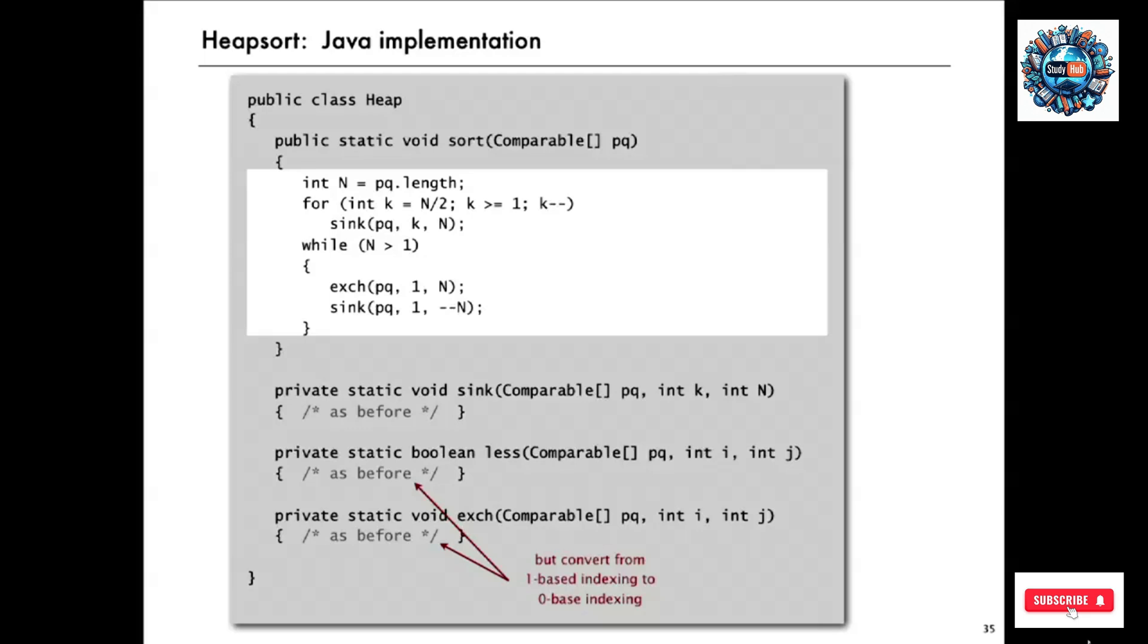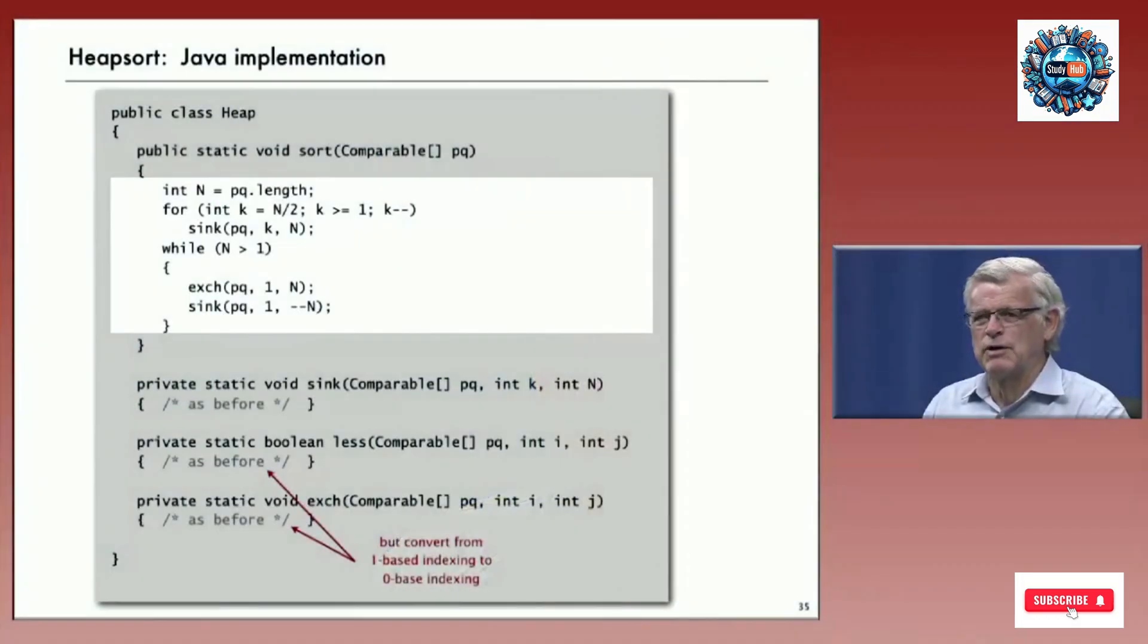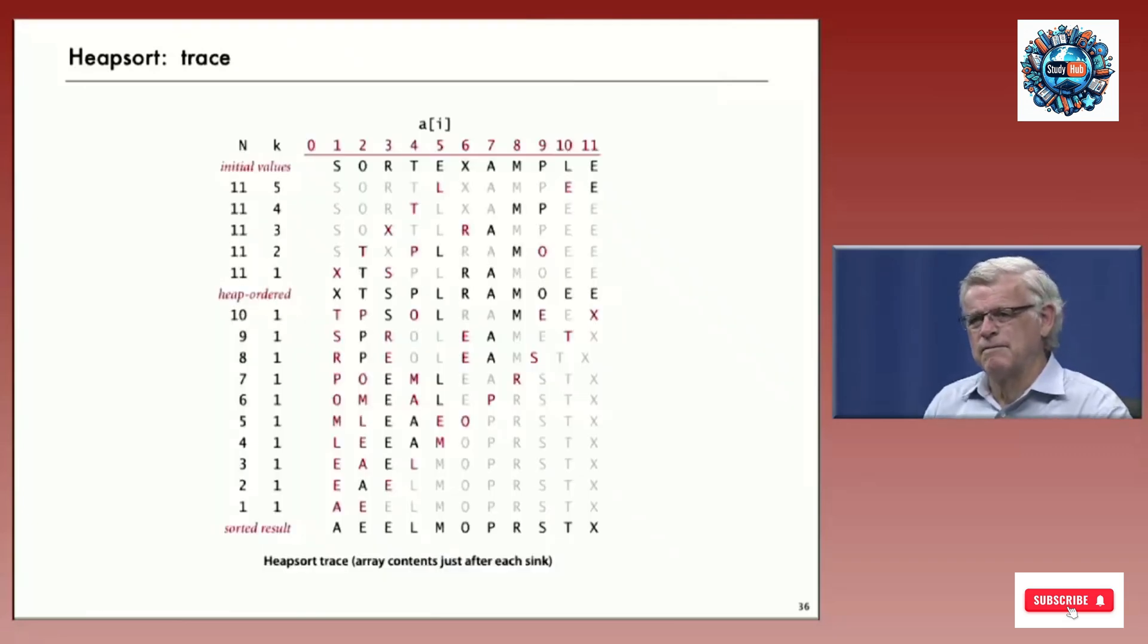There's one little detail. When you're sorting an array, of course, position zero comes into account. And we've been building our heaps from position one. So we can take care of that in the less and exchange methods by just decrementing the indices in those methods to have it work as if the array were zero through n. And that's a little implementation detail. But otherwise, this is a fine sort implementation that actually is very little code. And it's got a place in the theory of algorithms that I'll talk about in just a second.